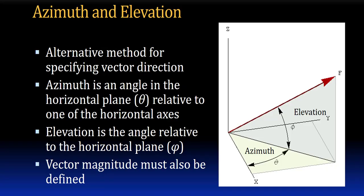Let's review quickly what azimuth and elevation angles are. Here they're shown in a figure. The azimuth is the angle in the horizontal plane, measured here as theta, relative to one of the horizontal axes. And the azimuth is measuring from the x-axis to the component of the force vector reflected down on the horizontal plane. The elevation is the angle relative to the horizontal plane, it's phi.